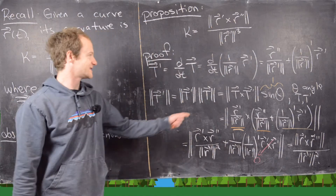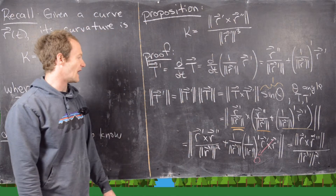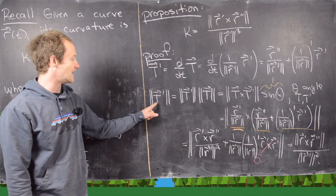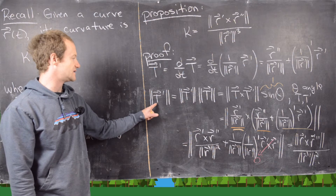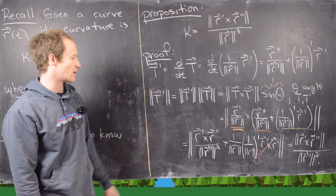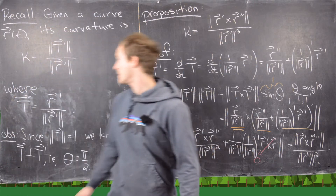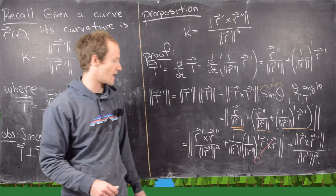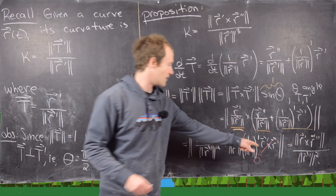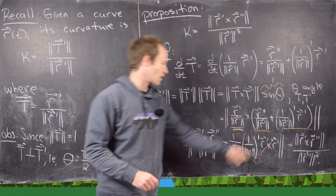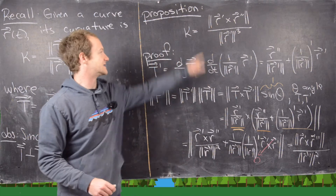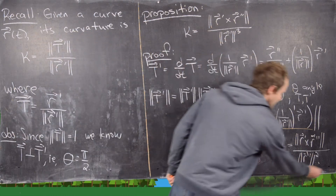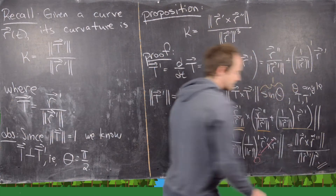That's essentially the end of the proof: dividing this magnitude of T' by the magnitude of r' gives us exactly the cross-product curvature formula. That finishes the proof. We'll clean up the board and then look at some examples.